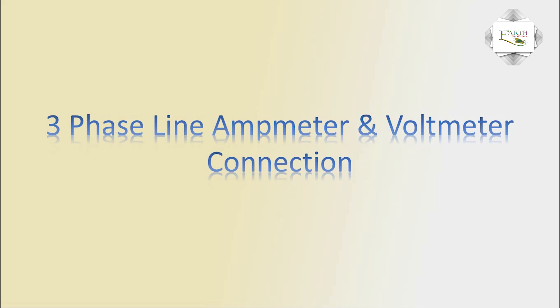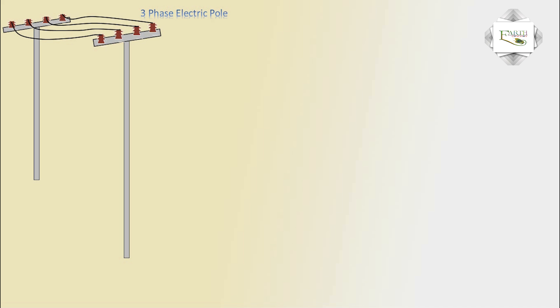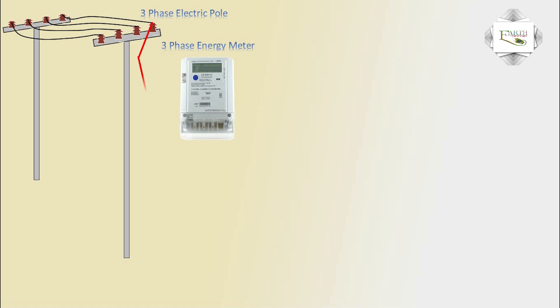Hello friend, today I explain the three-phase line ammeter and voltmeter connection. Electric pole three-phase line: red, yellow, blue, and neutral. Three-phase electric pole to three-phase energy meter connection — red, yellow, blue, and neutral connections are all the same to the energy meter.